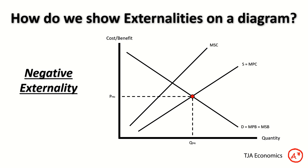We end up with two different equilibria. I've labelled the price and quantity P' and Q' for private — this is the equilibrium we end up at in the free market, where the private cost curve meets the private benefit curve. However, there's also an optimal allocation of resources, hence labelled P-opt and Q-opt. At that optimal allocation, we actually have a higher price — you pay more for a cigarette — and fewer are produced. There's a lower quantity of cigarettes.